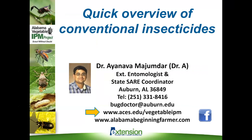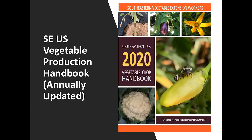Please read the label. If you need more information, you can find it on our website alabamabeginningfarmer.com and also on the aces.edu/vegetable IPM page. Some of what you will hear today is from the 2020 vegetable crop handbook. Remember this handbook is revised annually and it's important to get the latest edition from your extension agent. You can contact your county extension office or regional extension agent in Alabama, or the county office in any other state. If you're watching recordings, please contact your extension office to get updated information and read the label.